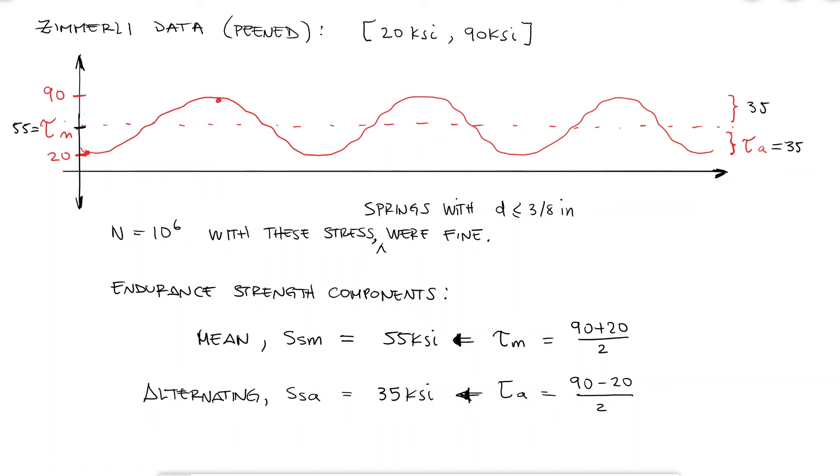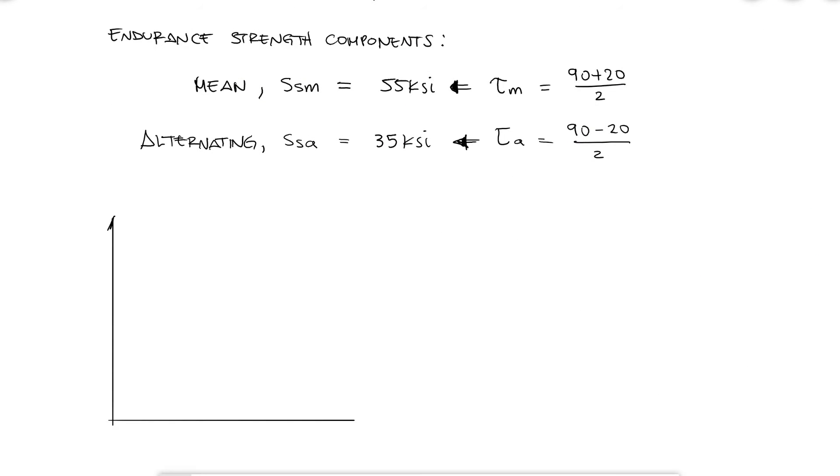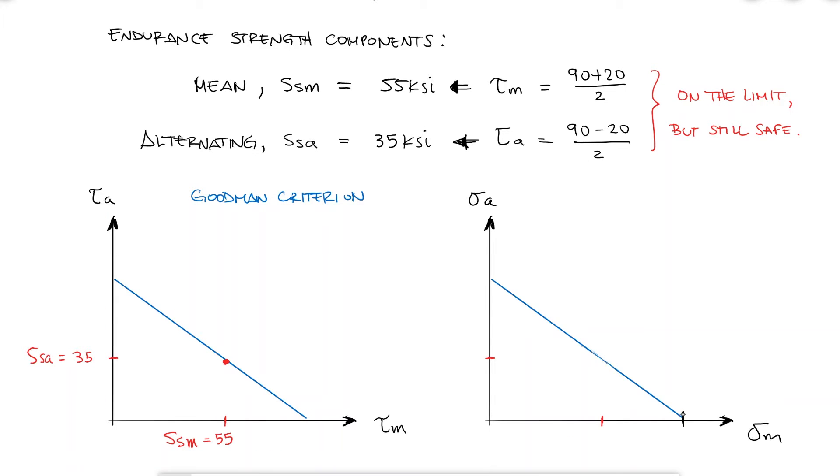The way we use these Zimmerli values depends on the failure criteria we want to use. For a Goodman criterion, if the alternating and mean stresses he used are safe, which is the same as saying that the alternating and mean endurance strength components are safe, we know that that point is located on the Goodman curve. If we know the equivalent property to the ultimate strength SUT, which is the x-intercept for Goodman on these fluctuating stress diagrams, we could project a line that goes from the equivalent property SUT passing through the torsional stress state to find the endurance limit.